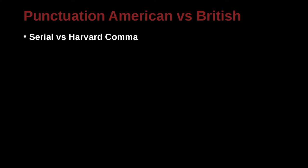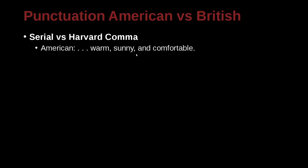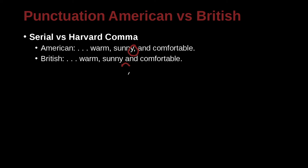The first thing we need to look at is the serial versus the Harvard comma. In the American way, if we have a list — for example, warm, sunny, and comfortable — you can see that we have a comma before the 'and.' In the British style, we often just skip that; there's no comma before the last item in the series. In this class, we're going to emphasize the American approach, so we're going to always have that comma there.